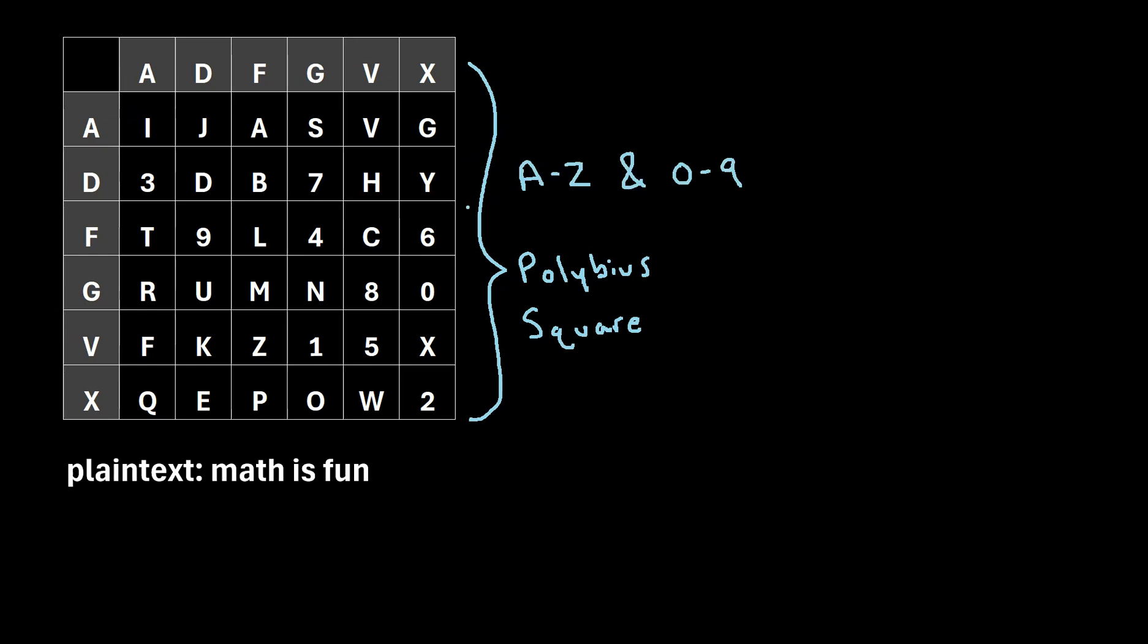So for this one, we've just filled it in in a random manner in which all of the letters A through Z along with the digits 0 through 9 are all contained within this square. And we'll notice that there are 26 total letters and 10 total digits, so that adds up to the 36 squares that we perfectly need to fill in this Polybius square.